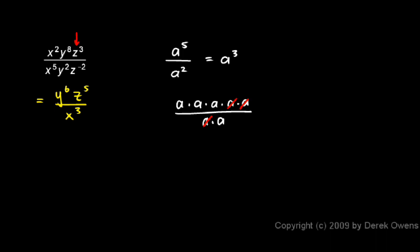Let's look at the z's: z to the power of three and z to the power of negative two. The same rule applies even if this exponent is negative. I have z to the power of this minus that — three minus negative two. And three minus negative two is the same as three plus two, which is five. So when I take three and subtract negative two, I get my new exponent, which is five. So I have z to the fifth.